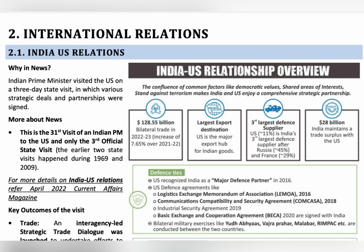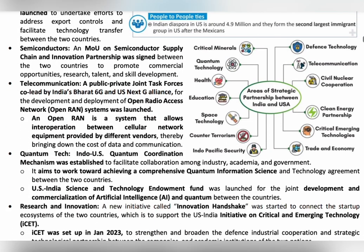India and the US are both democratic countries. Both stand against terrorism and both enjoy their strategic partnership to counter the Chinese influence on some parts of the world. Some important areas of strategic partnership between India and the US include critical minerals — you can see in the picture — and sharing of technological advancements in defense technology.